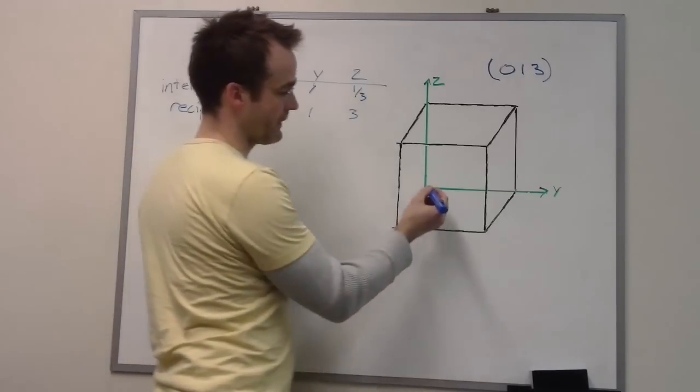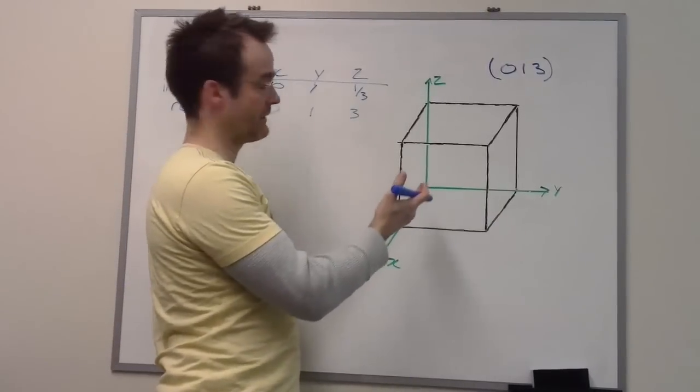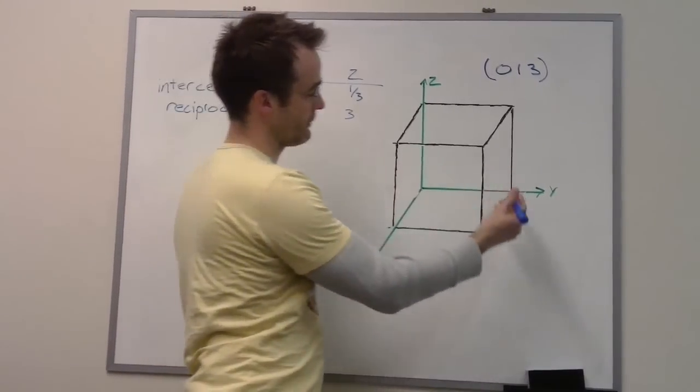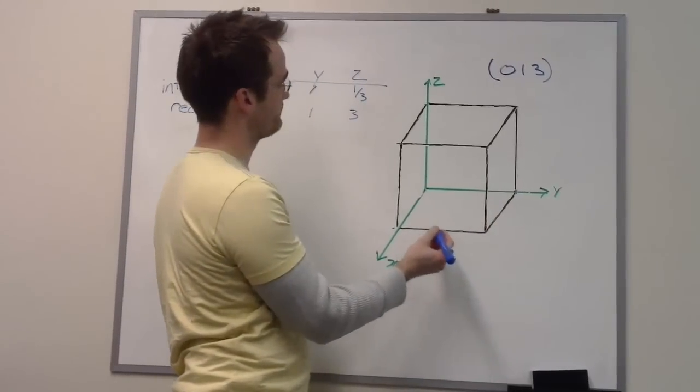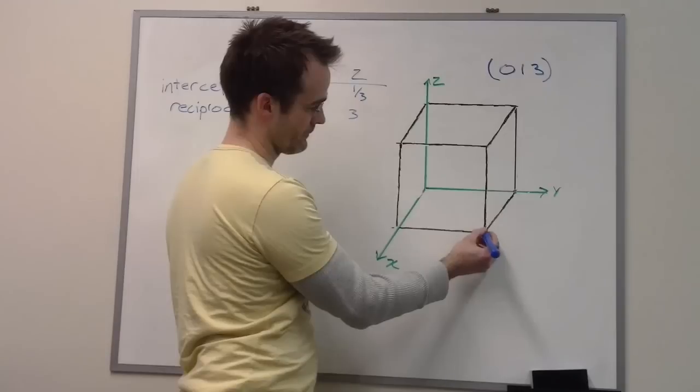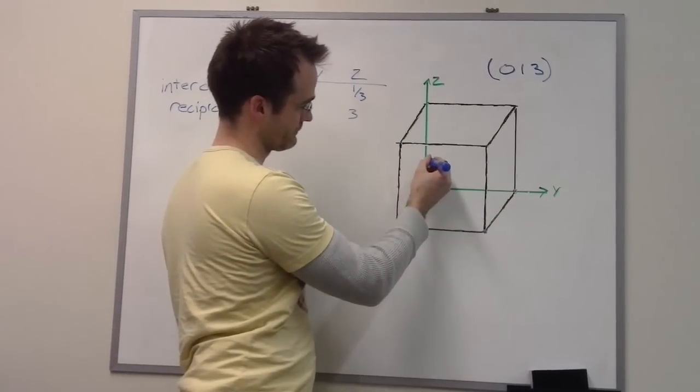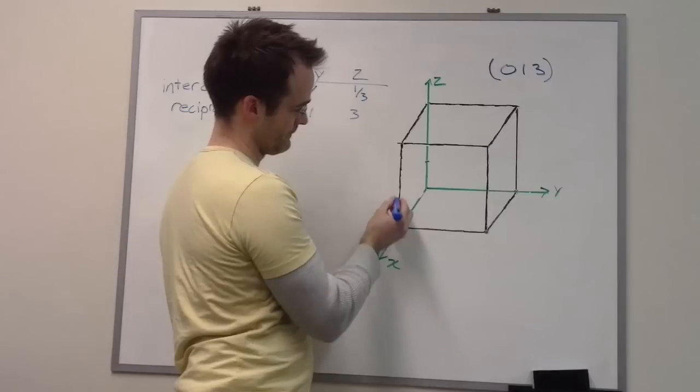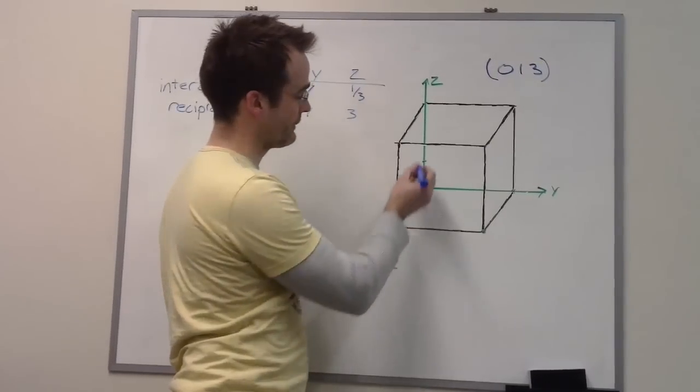So we can start at our origin and say it's parallel to the x axis, it intercepts y at 1, and z at 1 third. So these are the points where it leaves the unit cell.